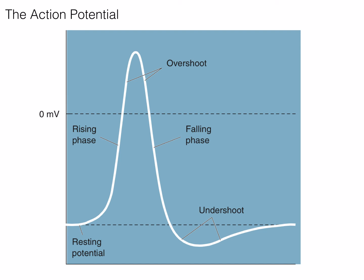Once threshold is met, the action potential begins with a rising phase. During this phase, voltage-gated sodium channels snap open, allowing the rapid influx of sodium ions. This influx increases the membrane potential to upward of 40 millivolts. Any point where the inside of the neuron is positively charged with respect to the outside is known as the overshoot.